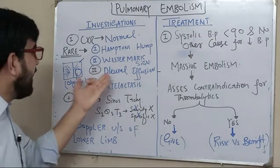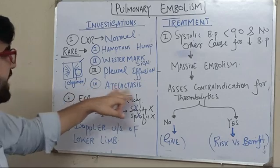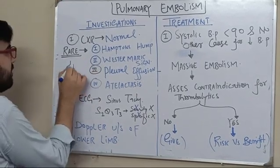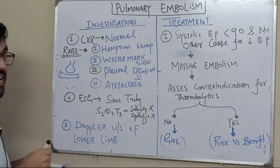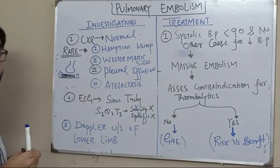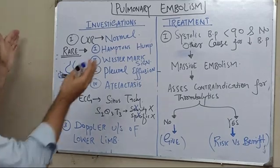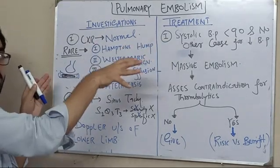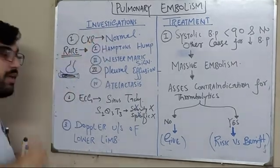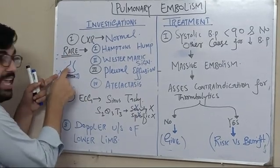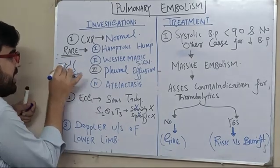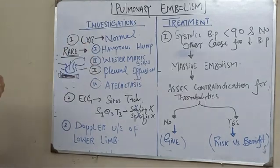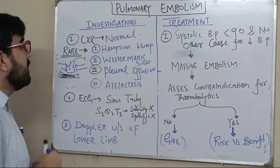Hampton's hump represents infarction; the Westermark sign represents oligemia with decreased blood flow. You can also expect pleural effusion in infarction, and atelectasis — meaning collapse. Why is there collapse in pulmonary embolism? If there is no blood coming toward an alveolus, that portion of the lung collapses to move air toward areas of the lung which have good blood supply. So atelectasis occurs because there is no blood flow to that area, causing it to collapse to redirect air to alveoli with normal blood flow. In majority of cases, the chest X-ray is normal.